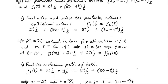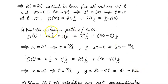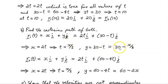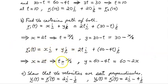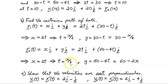Now let's find the Cartesian path of both particles. For r1, setting x = 2t gives t = x/2, and y = 30 − t becomes y = 30 − x/2. For r2, x = 2t again gives t = x/2, and y = 60 − 4t becomes y = 60 − 2x. That is the Cartesian path of the second particle.